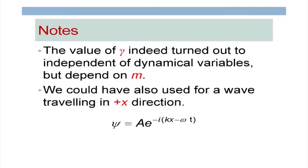The value of gamma turns out to be independent of dynamical variables but does depend on m. We have not seen particles of different m interfering with each other — an electron beam interferes only with an electron beam, not with a neutron beam. So this particular constant being dependent on m does not bother us.